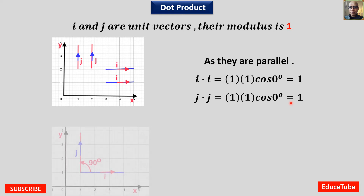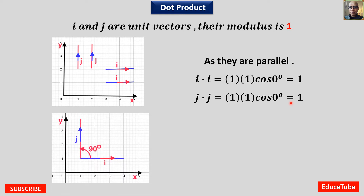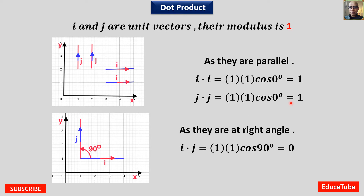But if we place vectors i and j at an angle of 90 degrees, their dot product i dot j gives cos 90, and we know that cos 90 is zero, so the result is zero. Similarly, j dot k, having an angle of 90 degrees, will also be zero.